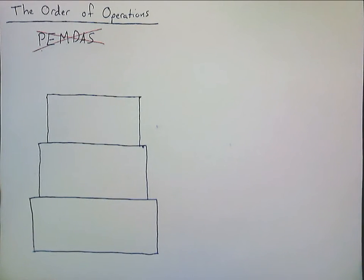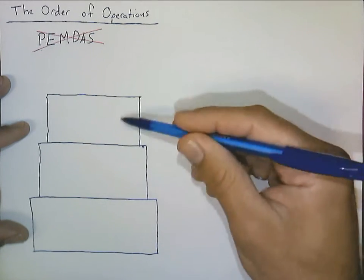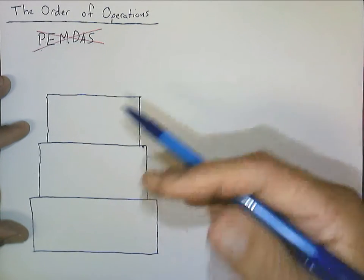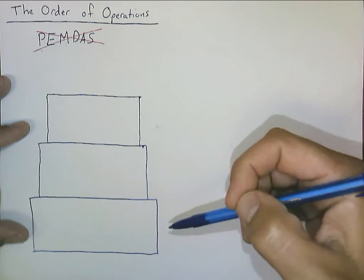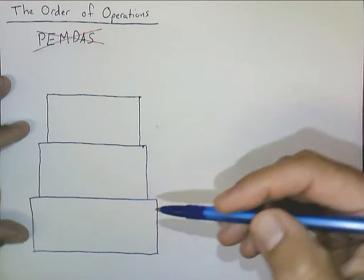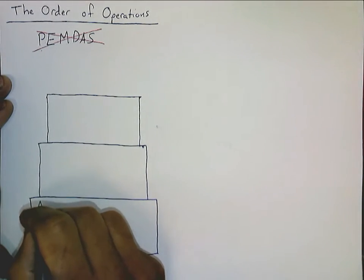One way I like to understand the order of operations is basically through a tower, kind of like this, or a wedding cake, or however you want to think about it. We build the operations up from this base level. And in this base level is, of course, the simplest operation, which is addition.